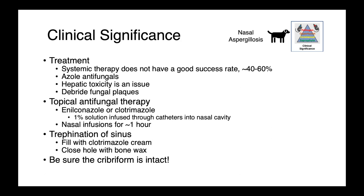Another, perhaps more successful strategy is to actually trephinate the sinuses of the dogs — the sinuses on the side where we have the Aspergillus infection — fill that sinus with clotrimazole cream, and then close the hole in the bone with bone wax. The idea is that the clotrimazole slowly makes its way out of the sinus into the nasal cavity, providing longer-term topical antifungal therapy to the nasal aspergillosis.